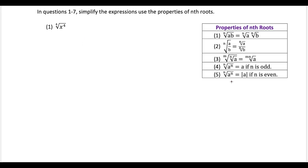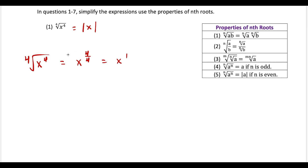For this first question, we're going to use the fifth property and this is just going to be absolute value of x. Now if you do this a different way, some people might fall into this trap and just call this x to the 4 over 4, which is going to be equal to x to the first. The problem with writing our answer this way is that it's hiding some of our solutions — for instance, if x were to equal negative 3.